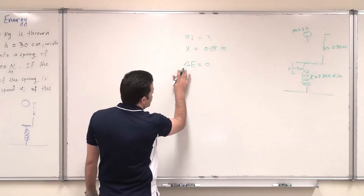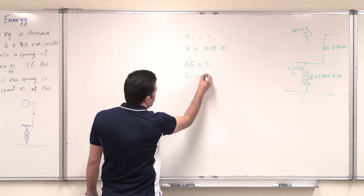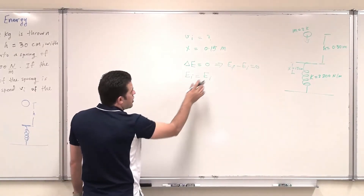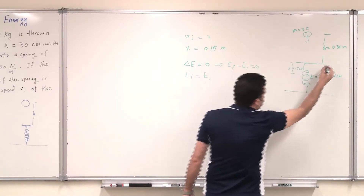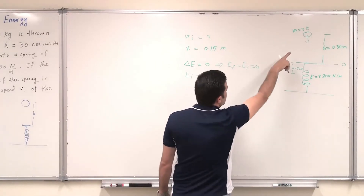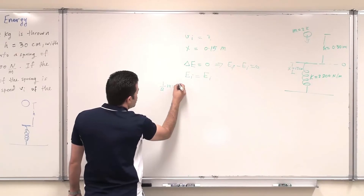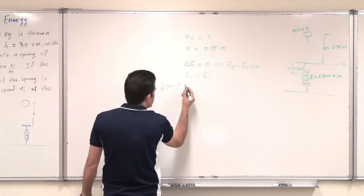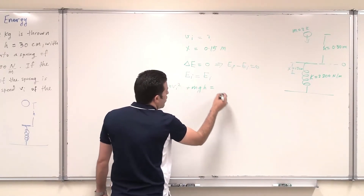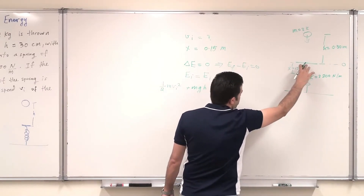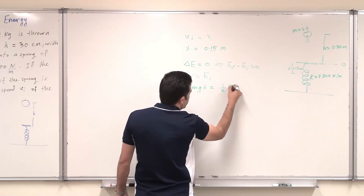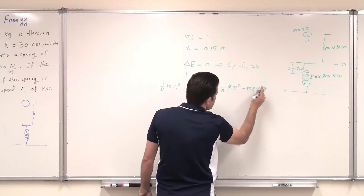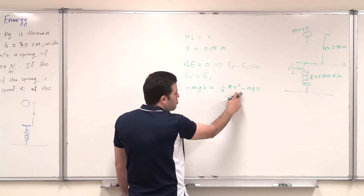Using conservation of mechanical energy: E initial equals E final. The initial energy is made of kinetic energy, half mv initial squared, plus gravitational potential energy mgh, where h is the initial height relative to the reference point. The final energy is the potential energy of the compressed spring, half kx squared, minus mgx, since the compression x is below the reference point.